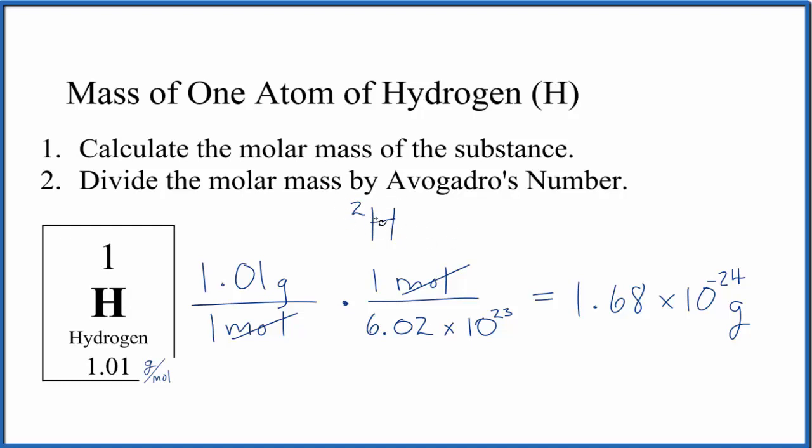If you wanted to know the mass of one atom of deuterium, what you would do is instead of the average, you'd put the mass number here for deuterium in and then divide by Avogadro's number.